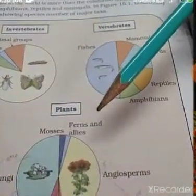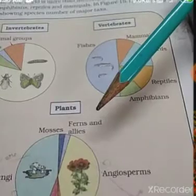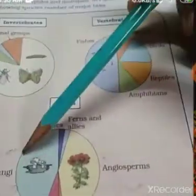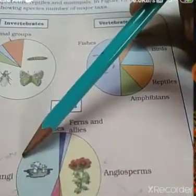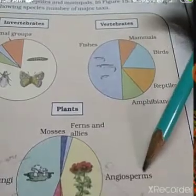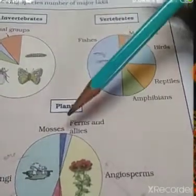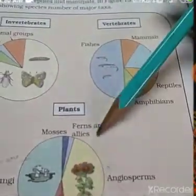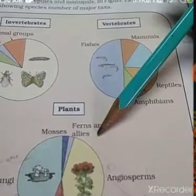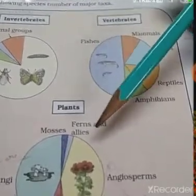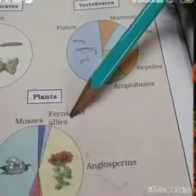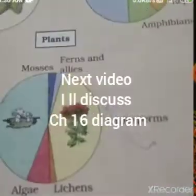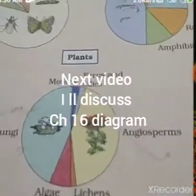The third group: the majority of the portion of the graph is consumed by fungi, and then angiosperms, and thereafter by algae, mosses, ferns, and allies, and then finally lichens. So these are the proportions.